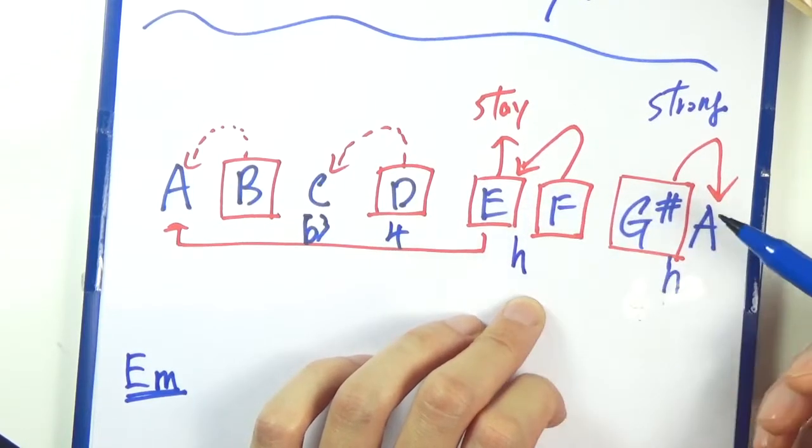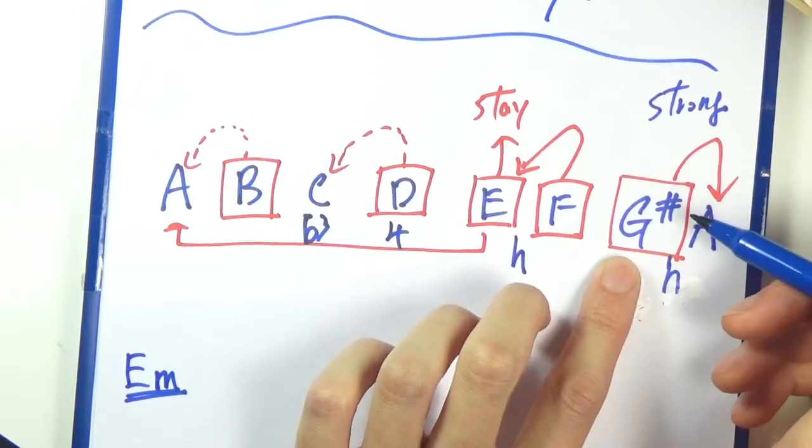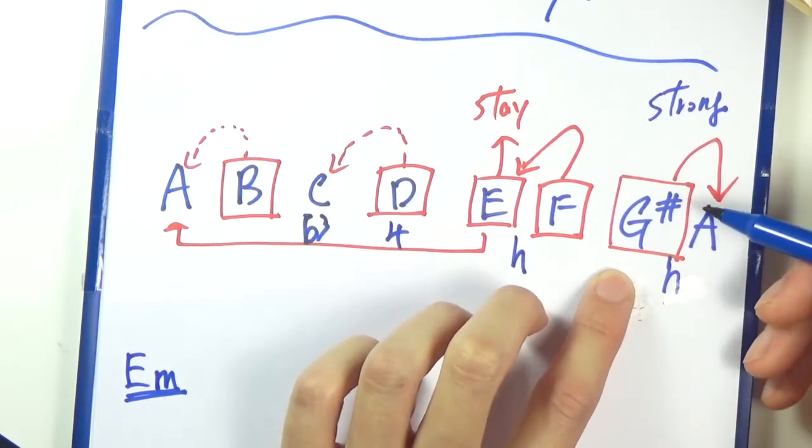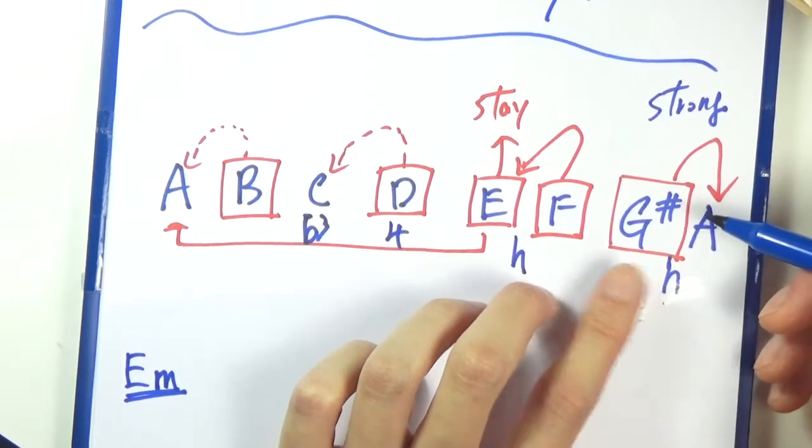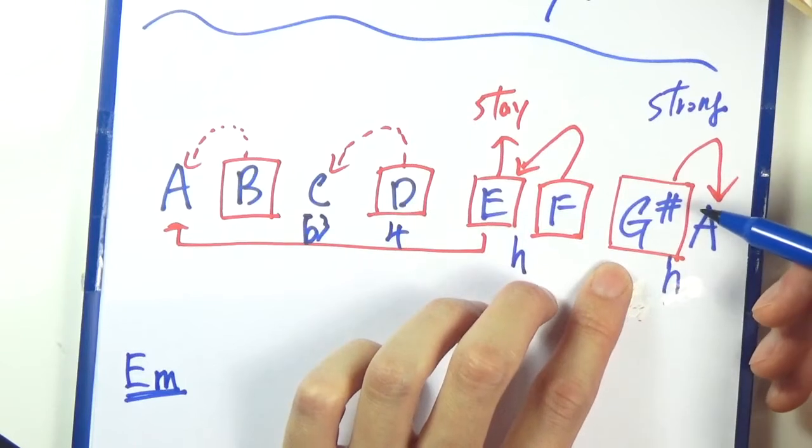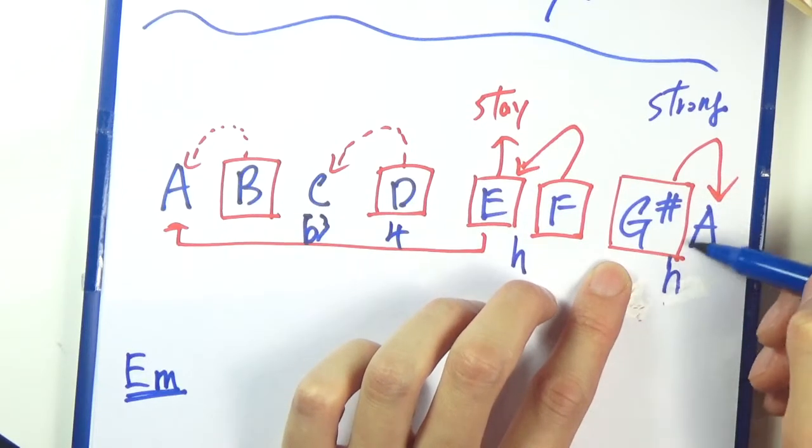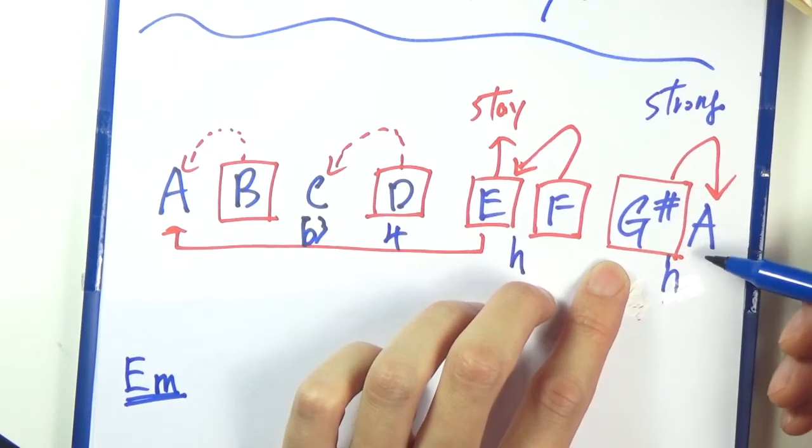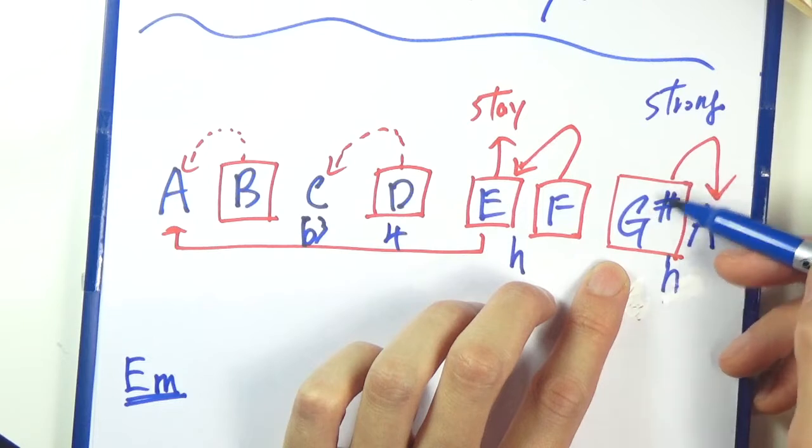Let's go to G sharp, our new note in harmonic minor scale. And for G sharp, it is half step down from the root. So it has a very strong resolution to go up. So it is a harmonic minor sound.